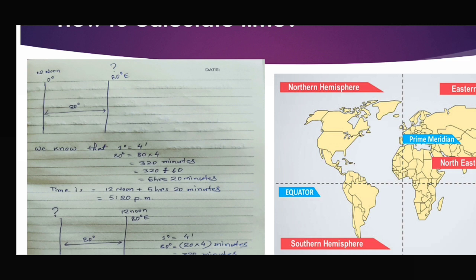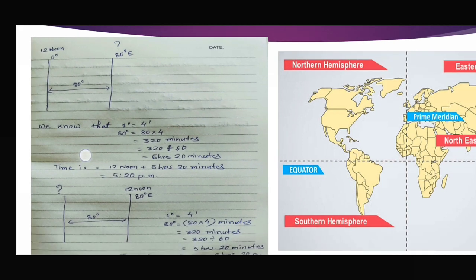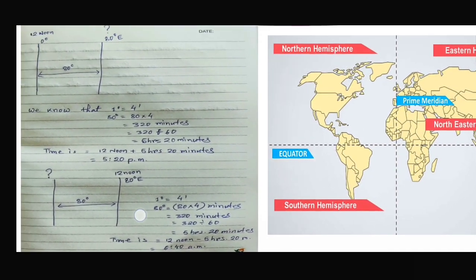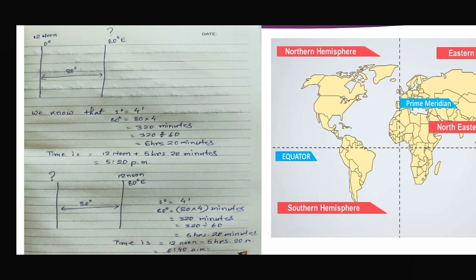That gives us 5:20 PM — PM means post meridian, so it is evening. Zero degree has 12 noon, while 80 degrees east is experiencing 5:20 PM. Now let's do a reverse calculation: if it is 12 noon on 80 degrees east, what is the time on zero degree?